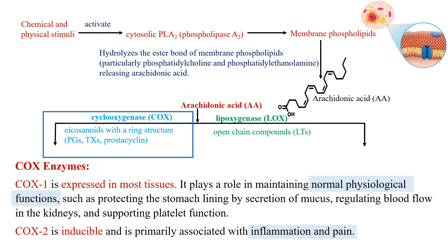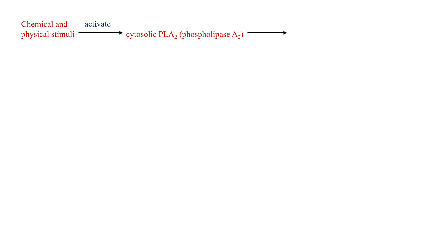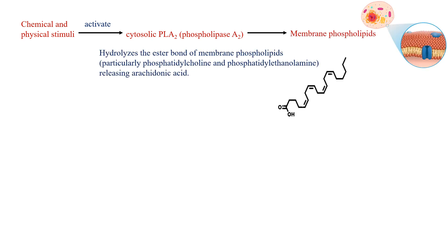When the COX enzymes start their work they create eicosanoids — prostaglandins, prostacyclins, and other ring-structured compounds. If the LOX enzyme joins in, it creates different open-chain compounds. In short, COX-1 manages regular everyday tasks while COX-2 deals with inflammation and pain. These prostaglandins are born from teamwork.